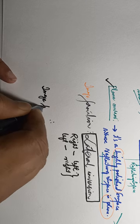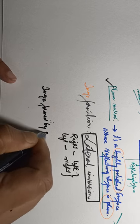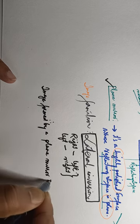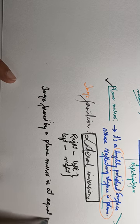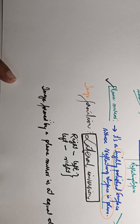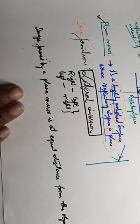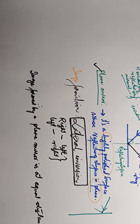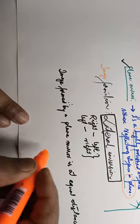Another very important characteristic: the image formed by a plane mirror is at equal distance from the object. This can be rather confusing, so let me explain with a small example.